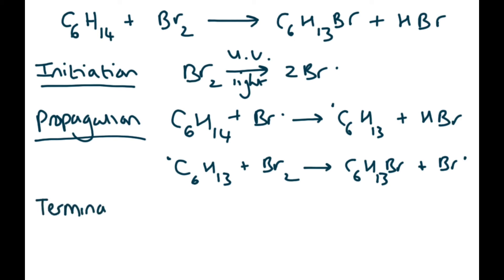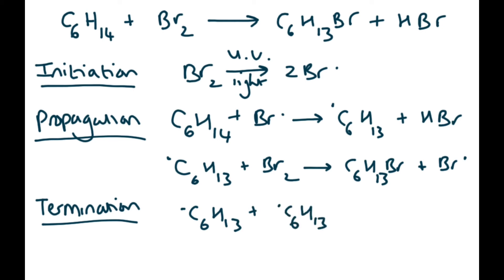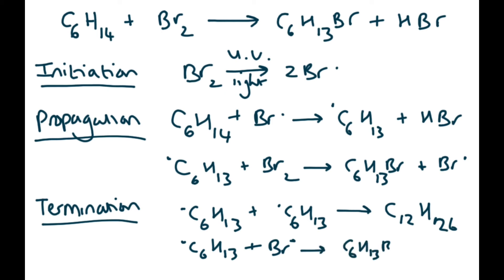The termination steps: two C₆H₁₃ carbon radicals react together to give a large C₁₂H₂₆ molecule; or the C₆H₁₃ radical reacts with a bromine radical to give the haloalkane; or two bromine radicals react with each other to regenerate Br₂.